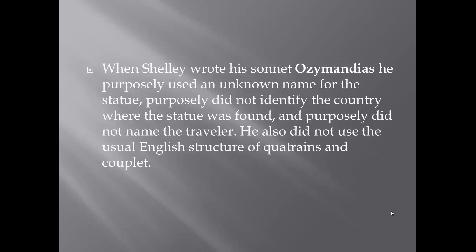When Shelley wrote his sonnet Ozymandias, he purposely used an unknown name for the statue, purposely did not identify the country where the statue was found, and purposely did not name the traveler. He also did not use the usual English structure of quatrains and couplets.